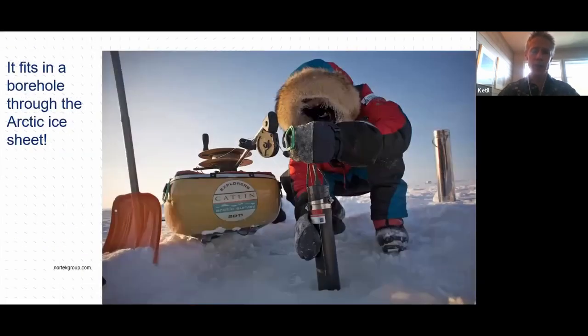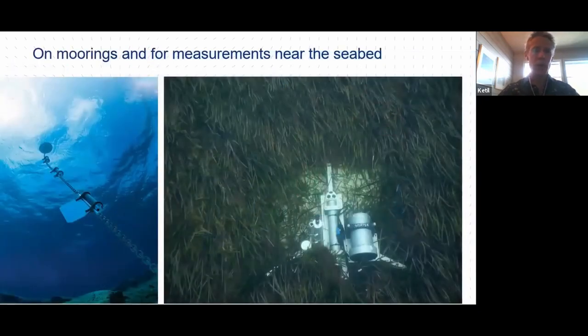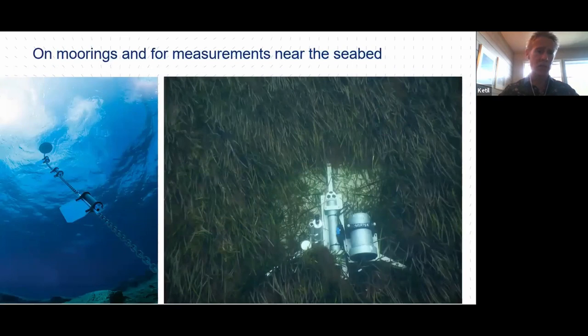The physical dimensions of the sensor is also quite attractive because it's possible to deploy these through boreholes under the ice sheet. So the Aquadop is frequently used both in the Arctic and the Antarctic to measure currents below the ice. And here is an illustration of how it's mounted on the mooring line and also how the same instrument is mounted in a low profile seabed frame to measure close to the bottom. It's not as close as with the vector, but it's still quite close.